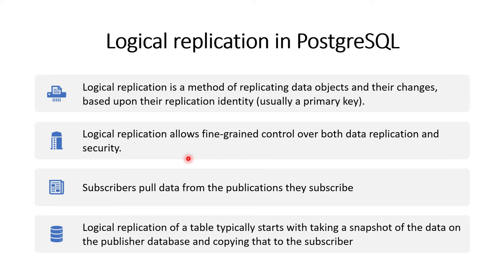In PostgreSQL, when we talk about logical replication, we talk about two terms: one is the subscriber and another is the publisher. The node where the application connects is known as the publisher node, and wherever the logical replication is replicating the data, that is known as the subscriber. The publisher is where changes are actually happening, and the subscriber is the one which is accepting those changes.